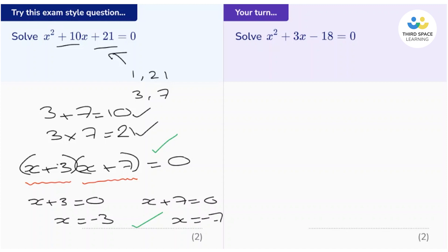OK, let's go through it. So it says, solve x squared plus 3x, take away 18, equals 0.